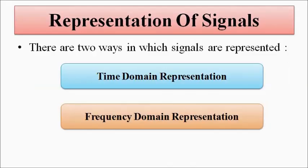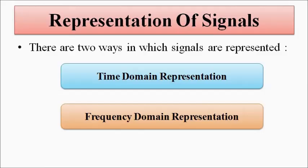There are two ways in which signals are represented. First, the time domain representation, with which we are well acquainted. Most of the signals we study — be it in signals and systems, communication systems, or data communication — are always in time domain: y equals f(t), a function of time. It can be sine(ωt), cos(ωt), the unit step signal u(t), the ramp signal r(t), the impulse signal δ(t), or a parabolic signal — whatever it is, it is a function of time.